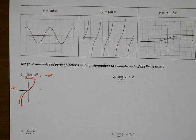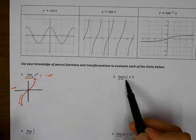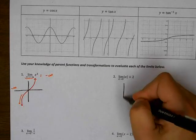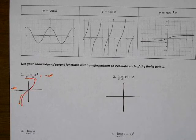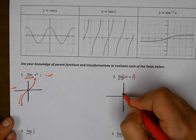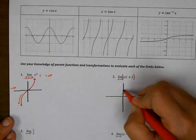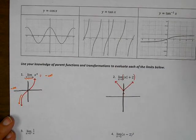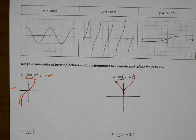For problem number two, I want to find the limit of the absolute value of x plus two. So I'm going to sketch myself a little picture so I can visualize what this would look like. Absolute value of x plus two would be an absolute value function shifted up two places. Now an absolute value function looks like a v for value. I'm just shifting it up.